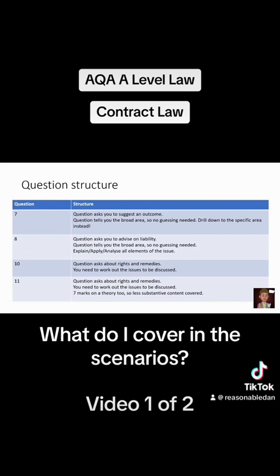We're going to focus on questions 10 and 11. Question 11 is slightly different in that it has 23 marks for the elements — such as rights and remedies — and then seven marks on the theory, which could be balancing of interests or morality, for example. It could be theory of contract, but generally it's one of those two.